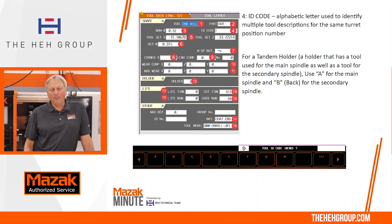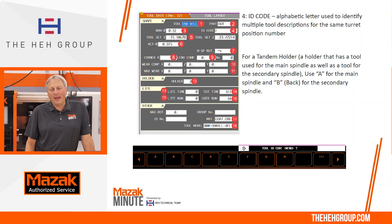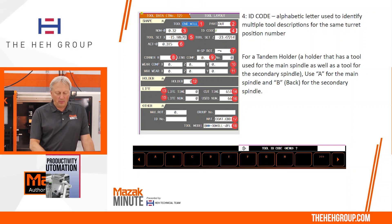Number four is the ID code. The ID code is used to identify multiple tool descriptions for the same turret position number. For a tandem tool, I'll have an A for the main spindle and a B for the second spindle.